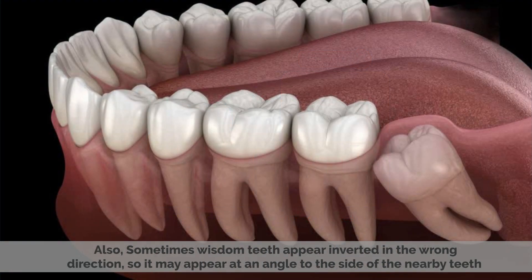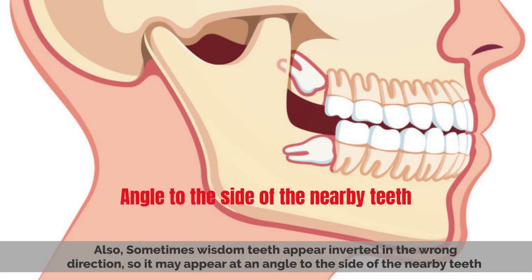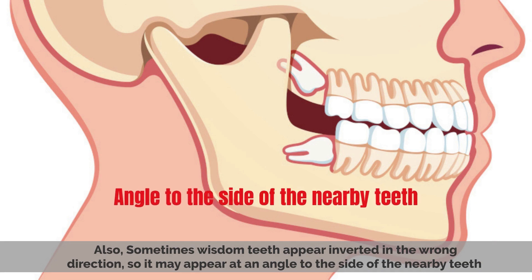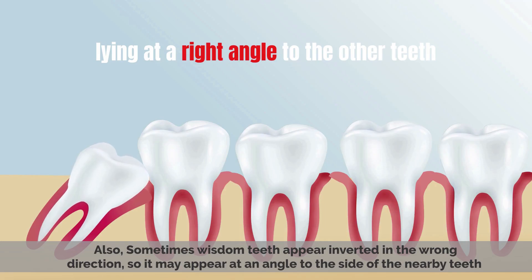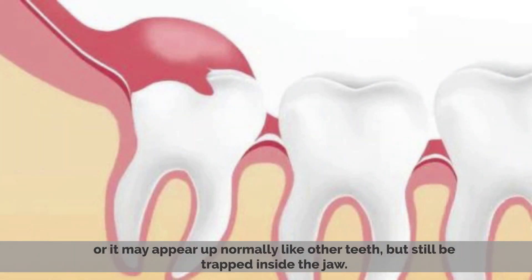Also, sometimes wisdom teeth appear inverted in the wrong direction. They may appear at an angle to the side of nearby teeth, or may appear lying at a right angle to the other teeth, or they may appear up normally like the other teeth but still be trapped inside the jaw.